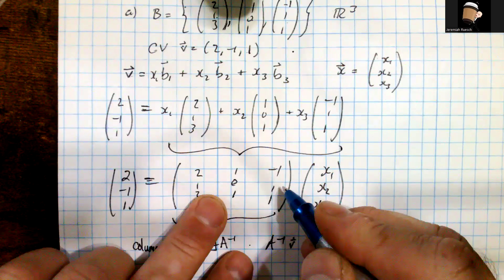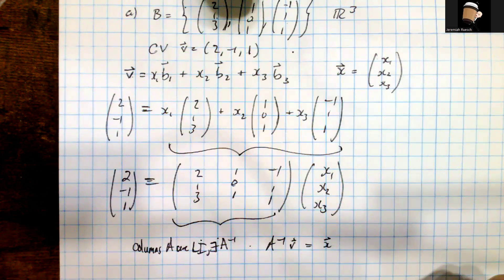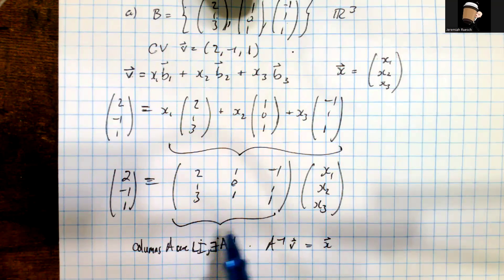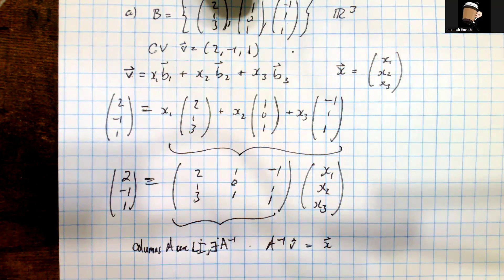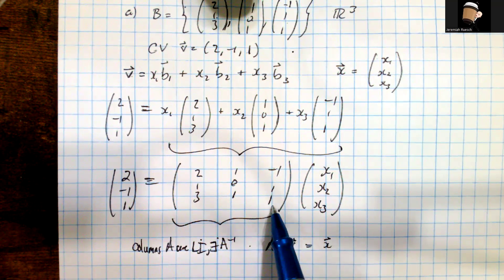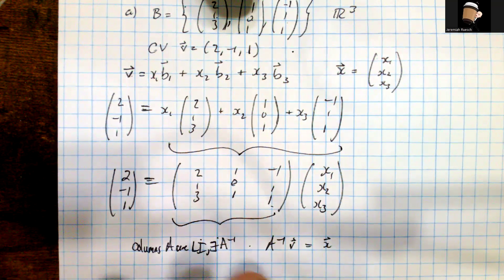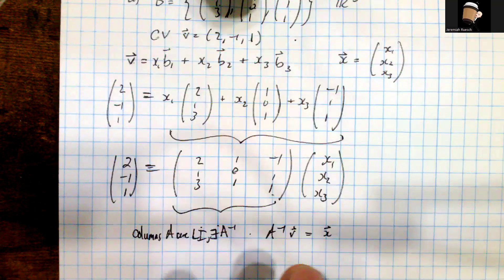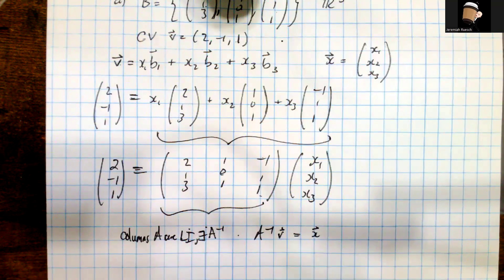The first method is the augmented matrix approach, and the second uses the fact that this basis set creates an invertible matrix. Another way of saying that is that the image of this transformation spans R³ — meaning the rank equals M, or equivalently, the null space contains only the zero vector. These are all different ways of saying the same thing, and they're starting to come together nicely.